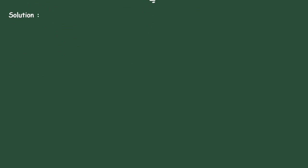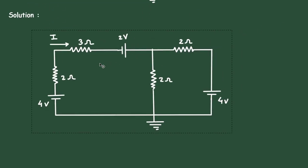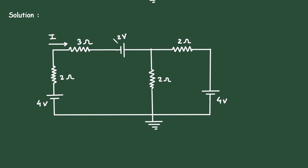Solution. First of all, here we can see this 2 volt and this 4 volt are connected in series, so we can add them. This will be 4 plus 2, and 4 plus 2 is 6 volt. So this will be removed from here and this will be of 6 volt.